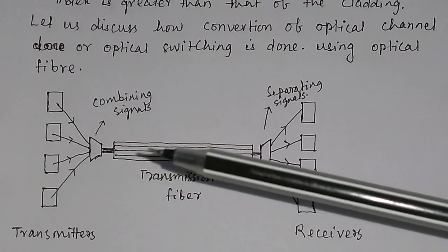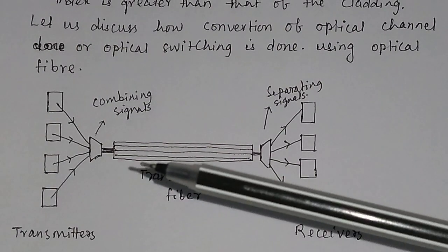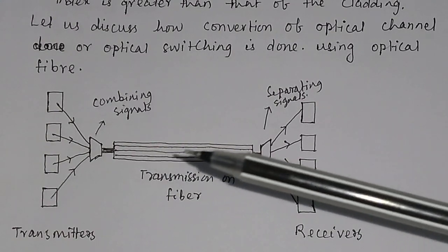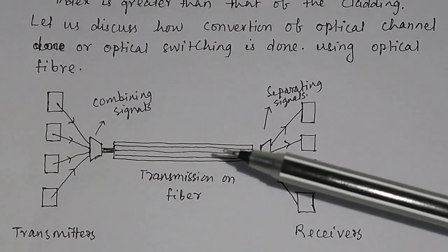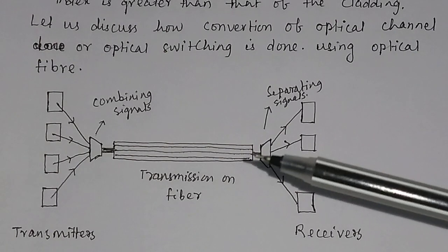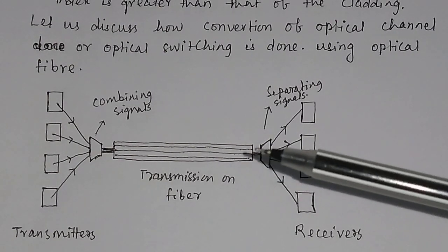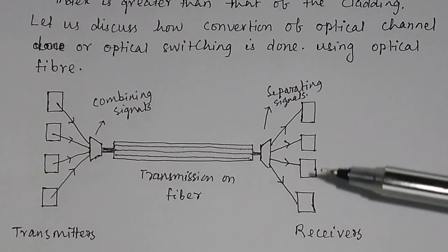Then the signal passes through a transmission fiber. This is the fiber through which the signals get transmitted. And this is a device to separate the signal. And these are the receivers.